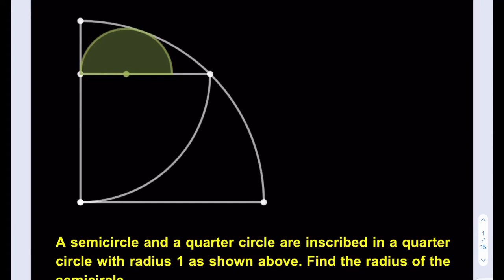Hello everyone, in this video we're going to be solving a geometry puzzle. A semicircle and a quarter circle inscribed in a quarter circle with radius 1 as shown above. Find the radius of the semicircle.